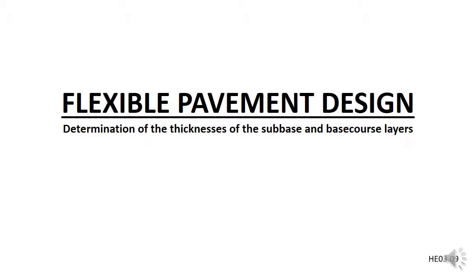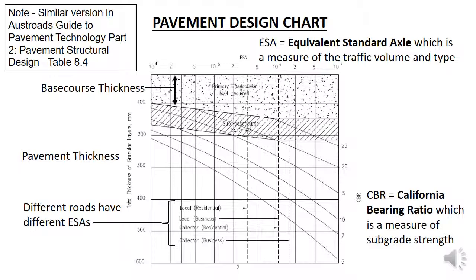This video looks at a method to determine the thickness of a flexible pavement for an urban road. This is a simple design process but gives you an idea of what road design involves. The design is based on the table shown here, taken from the Auckland Transport Code of Pavement Structural Design Code which is used by NZTA. There are other more sophisticated methods of designing a pavement used for busier roads such as state highways, but these are not covered by this course.